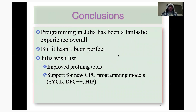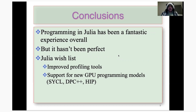Speaking about Julia itself, programming in Julia has been a fantastic experience overall, and I would say it's been transformative to my experience as a graduate student, considering JuliaChem is one of my main projects. However, I wouldn't say the language is entirely perfect. The first wish-list item is improved profiling tools — not that Julia doesn't have them, but I was looking for specific things like what proportion of runtime is spent within certain functions, and I wasn't quite able to get that. Also, there are a lot of new GPU programming models being used for exascale, such as SYCL, DPC++, and HIP, and it'd be great to see some support for those alongside CUDA and OpenCL.